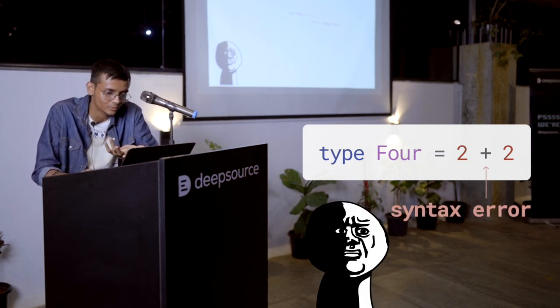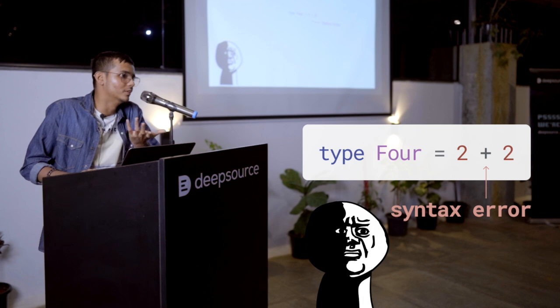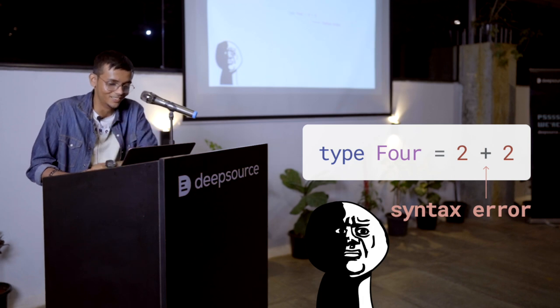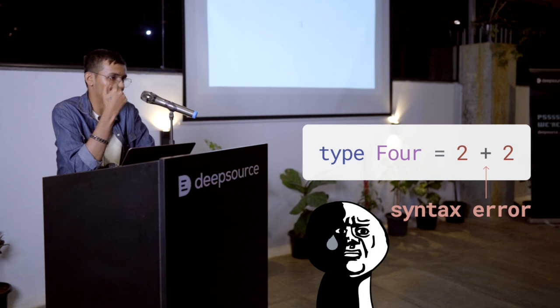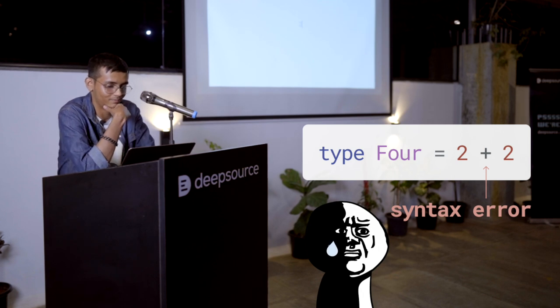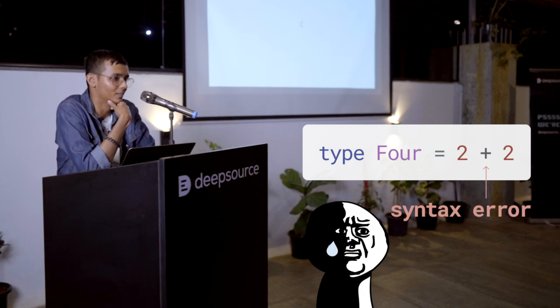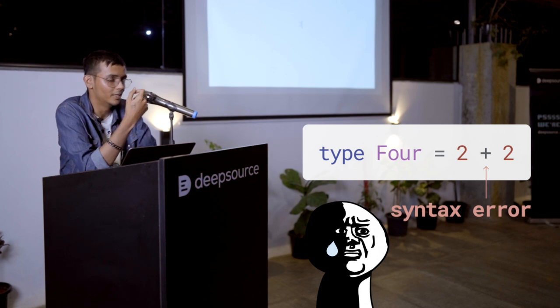Maybe I lied to you. Maybe you shouldn't trust me so easily. So how do we fix this? This is devastating. That's a problem. How do you perform arithmetic on integers if you can't even use operators on them?